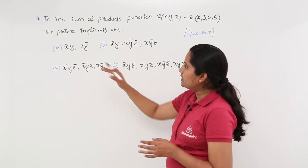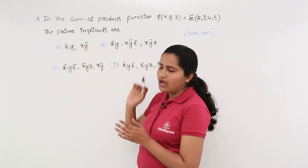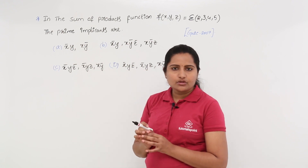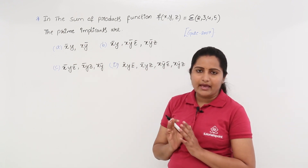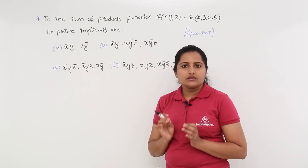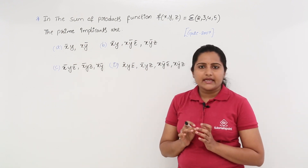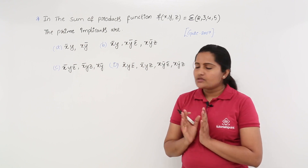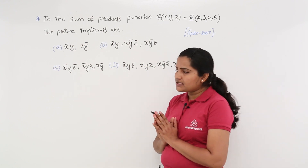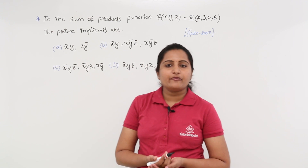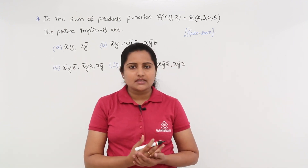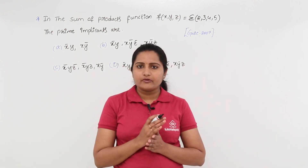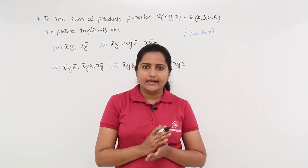Here the prime implicants are — as I already told you when I discussed K map — the prime implicants are nothing but groupings. Now we will see how many variable K map we need to consider here and how we need to group for prime implicants.